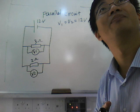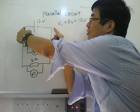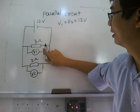So in a parallel circuit, the voltages are the same. Voltage, or potential difference: 12V, 12V, 12V. Now next we need to know the current.